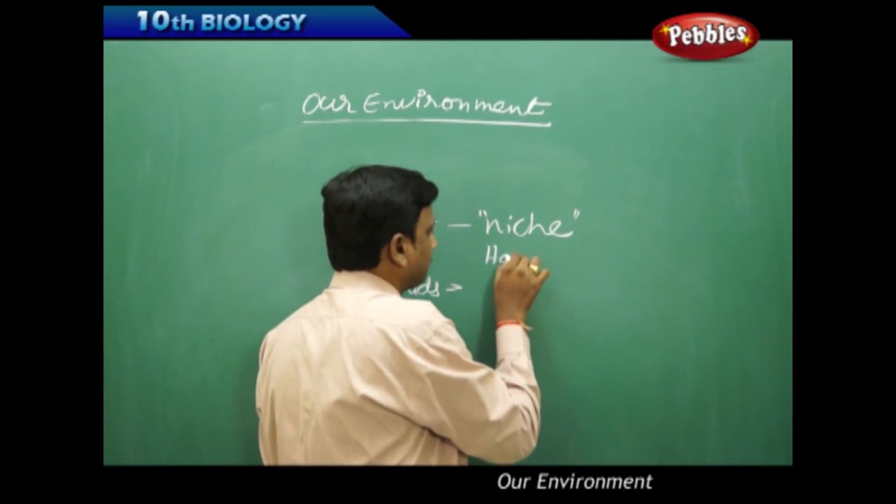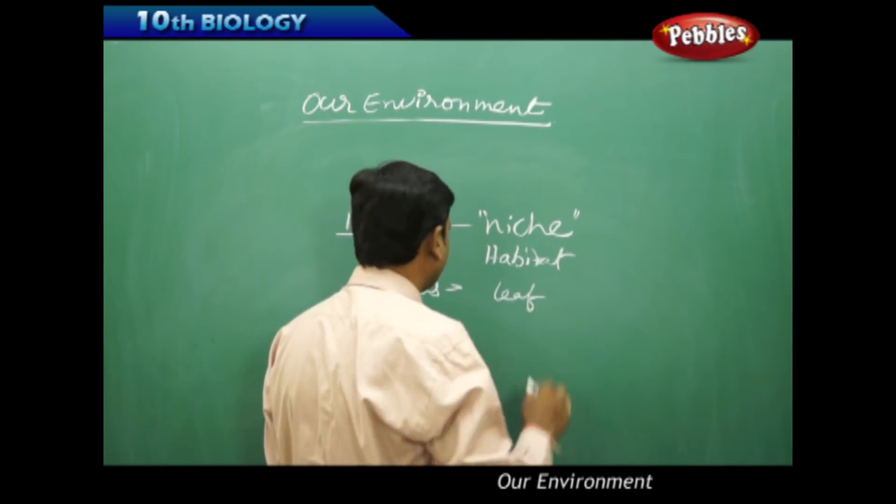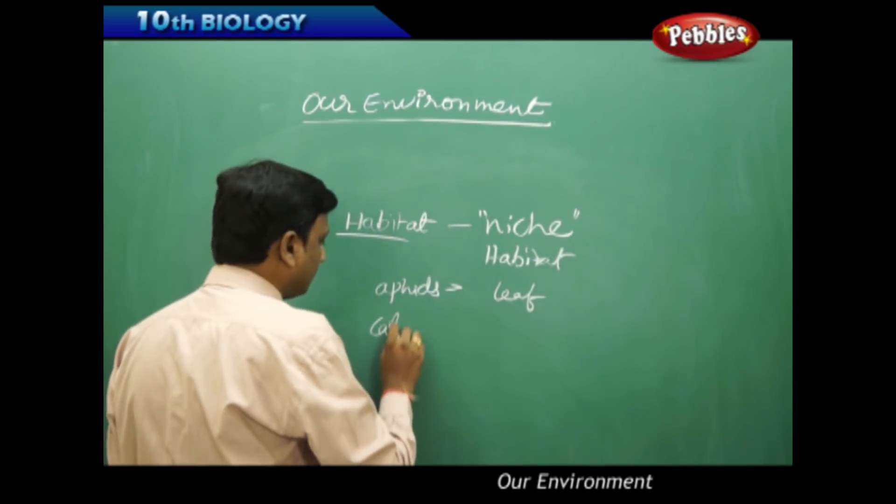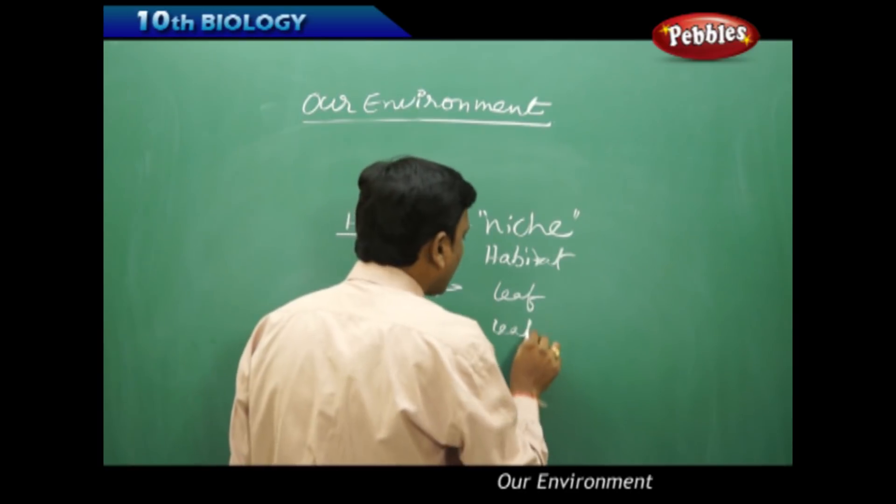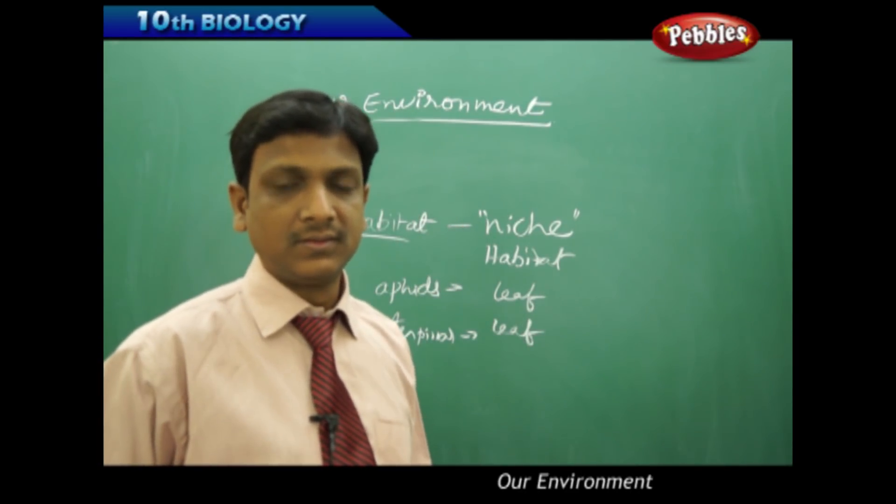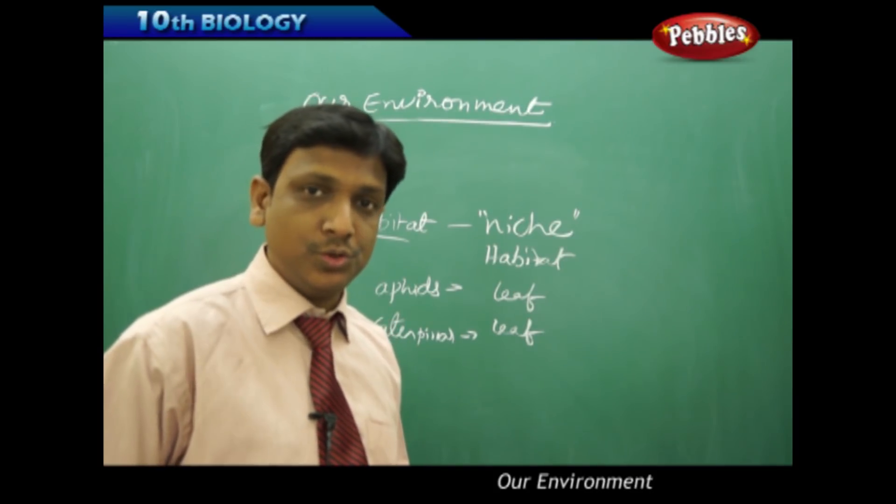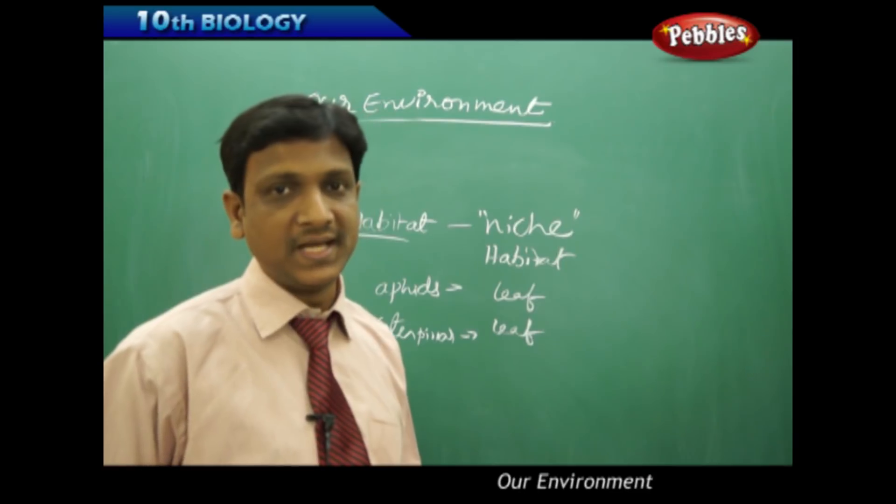You can take the caterpillar, this is also living on the leaf. In terms of habitat, both are having same habitat, leaf. But do both get same kind of food in the same way from the plant?